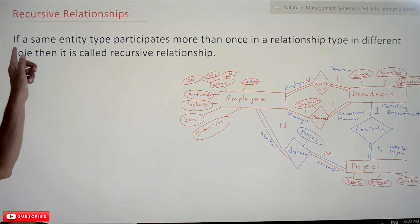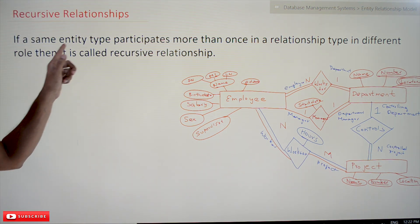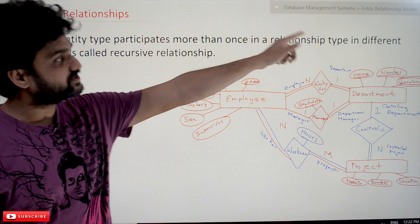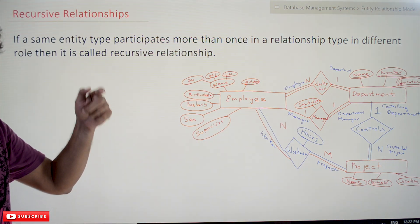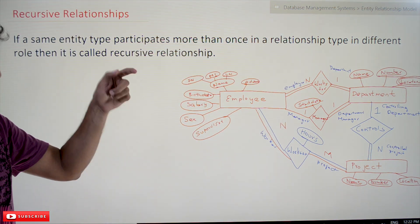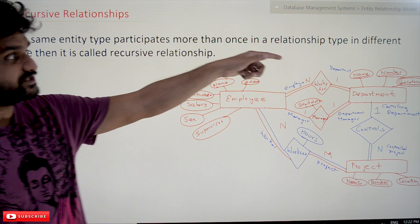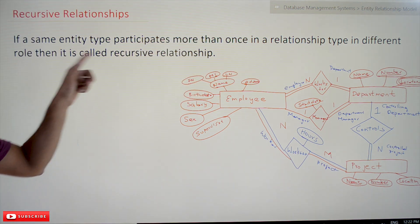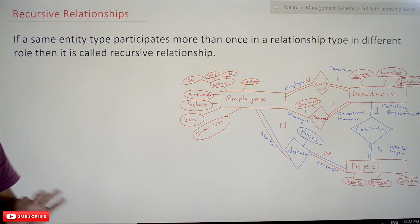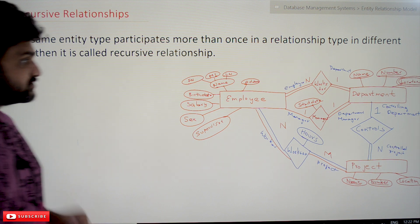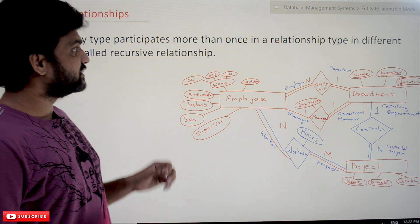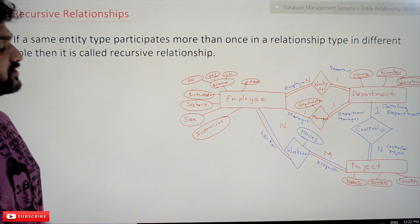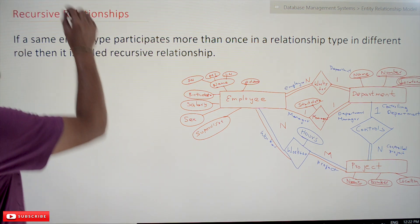What is meant by recursive relationships? If the same entity type participates more than once in a relationship type in a different role, then it is called a recursive relationship. By this definition alone we may not be able to understand this, so let's try to understand it using an example.